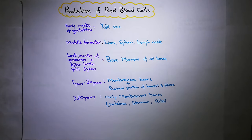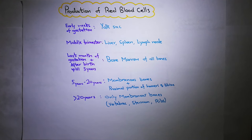Hello everyone. This is part 3 of chapter number 33. In this we have to learn how to become RBCs and what are the stages of erythropoiesis.